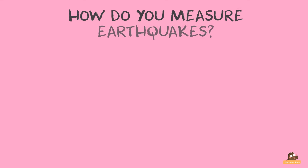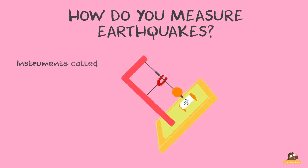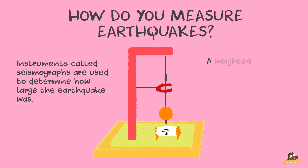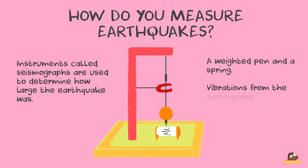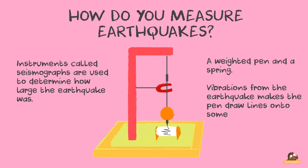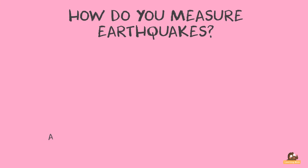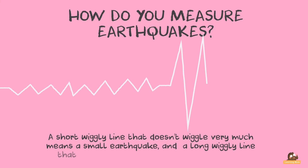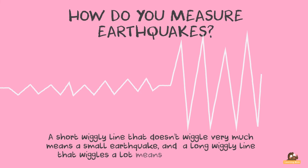How do you measure earthquakes? Instruments called seismographs are used to measure how large the earthquake was. The instrument uses a weighted pen and a spring, and the vibrations from the earthquake make the pen draw lines onto paper. A short wiggly line that doesn't wiggle very much means a small earthquake, and a long wiggly line that wiggles a lot means a large earthquake.